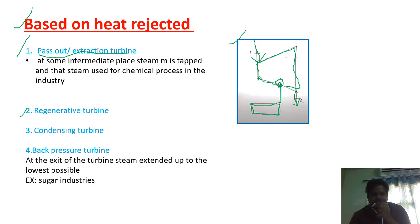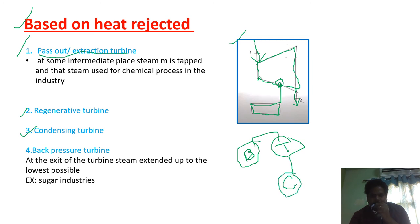The next type is the regenerative turbine, which we already discussed. The other type is the condensing turbine — this is the regular Rankine cycle. In the Rankine cycle, from the boiler steam enters the turbine, from the turbine it goes to the condenser, from the condenser to the pump, and from the pump back to the boiler. Since after expanding through the turbine the steam goes to the condenser, this type is called a condensing turbine.